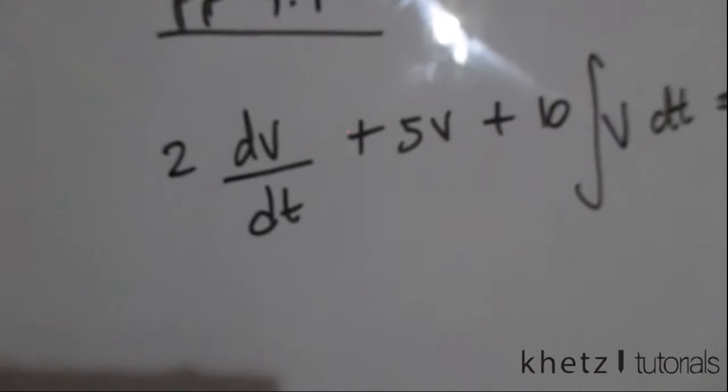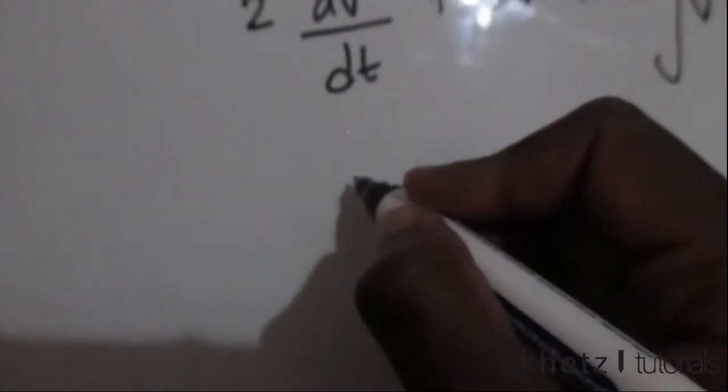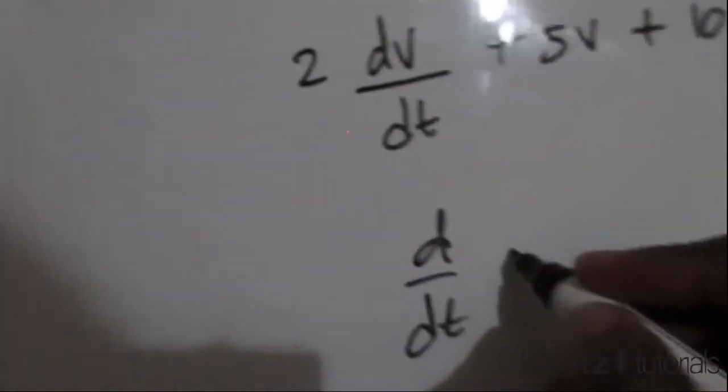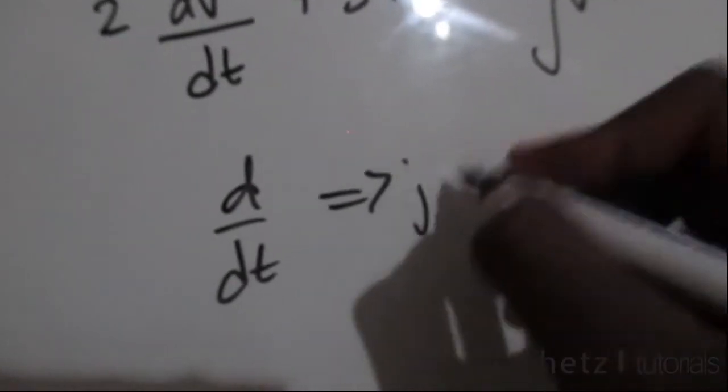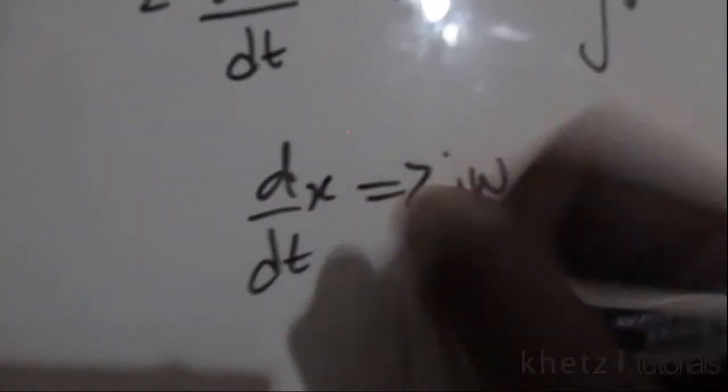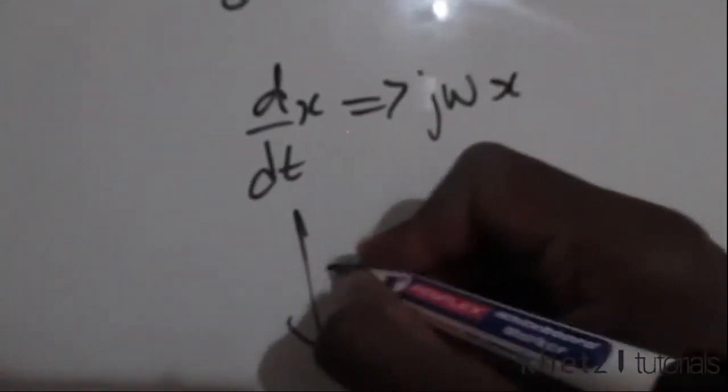To do that I'm just going to remind you that if you want to differentiate something, d over dt corresponds with jω times the variable which you want to differentiate, so let's say x, that would be jωx.